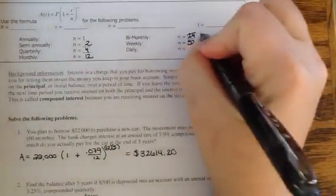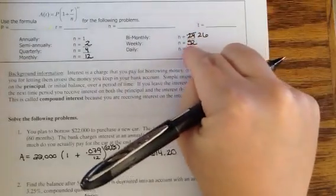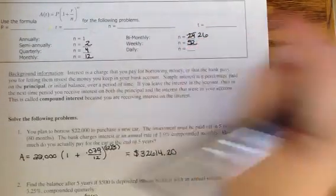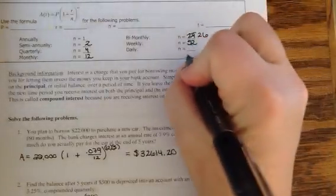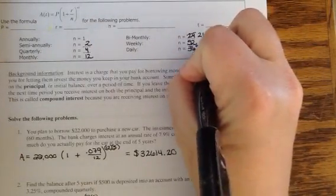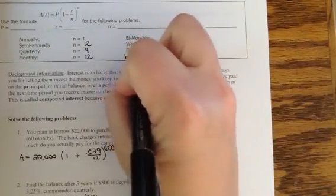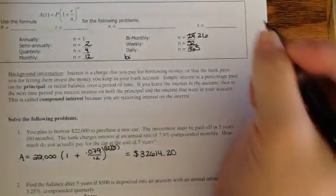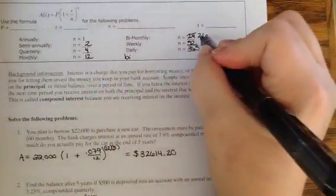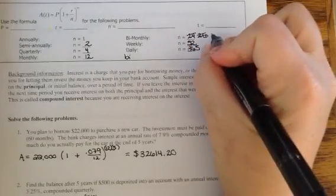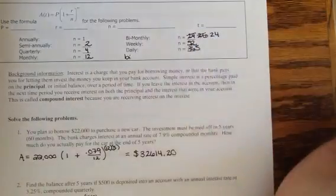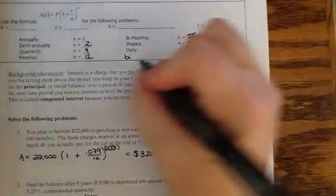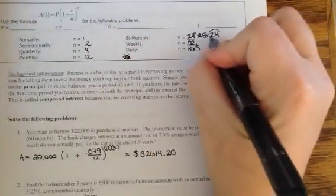Oh, sorry. This should be, bi-weekly should be 26. If there's two weeks in a year, then every other week means 26. And daily is going to be 365. Oh, sorry. Okay, go back. Bi-monthly is 24. That means twice a month. That was right the first time.